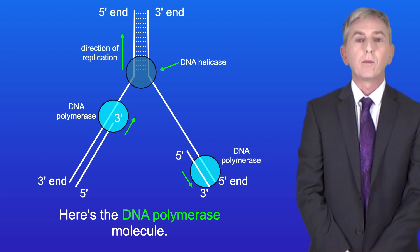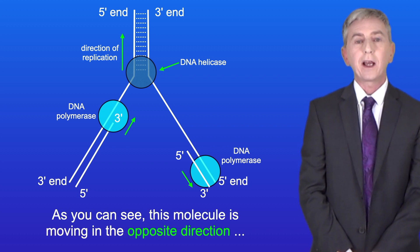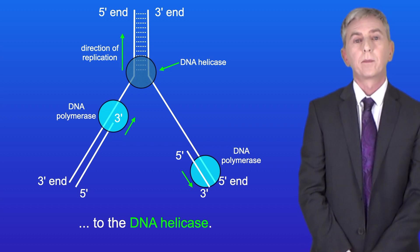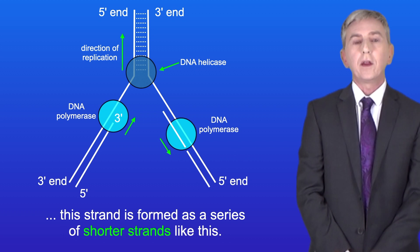Here's the DNA polymerase molecule. As you can see this molecule is moving in the opposite direction to the DNA helicase. So what this means is that as the DNA helicase moves along this strand is formed as a series of shorter strands like this.